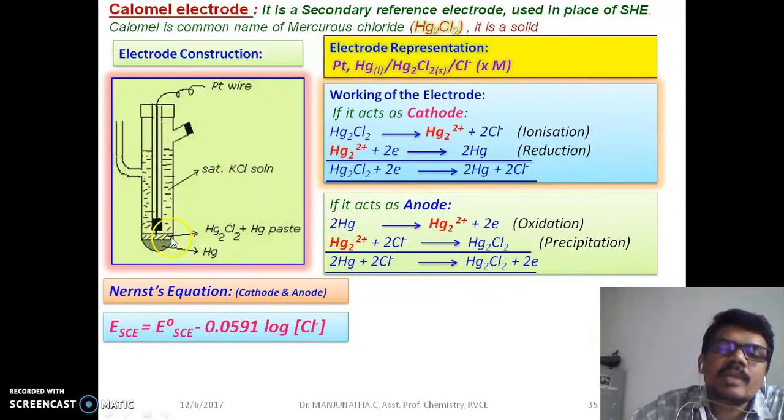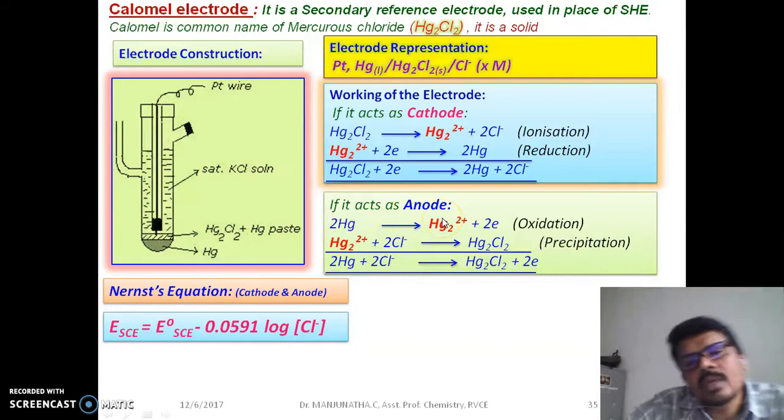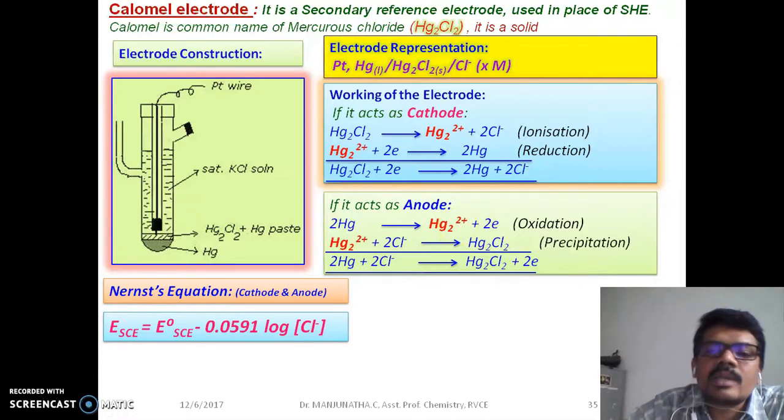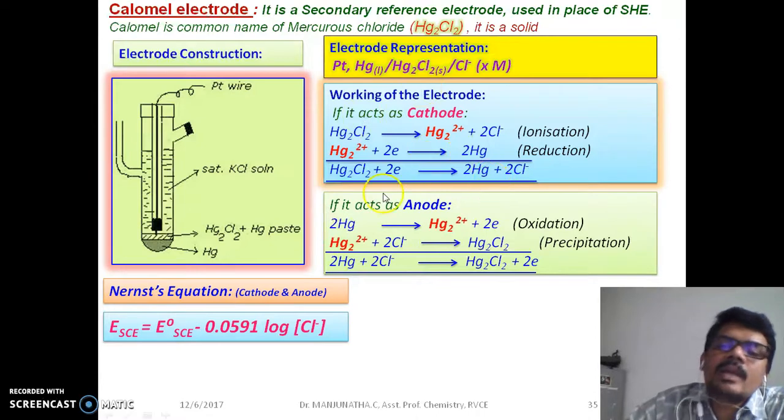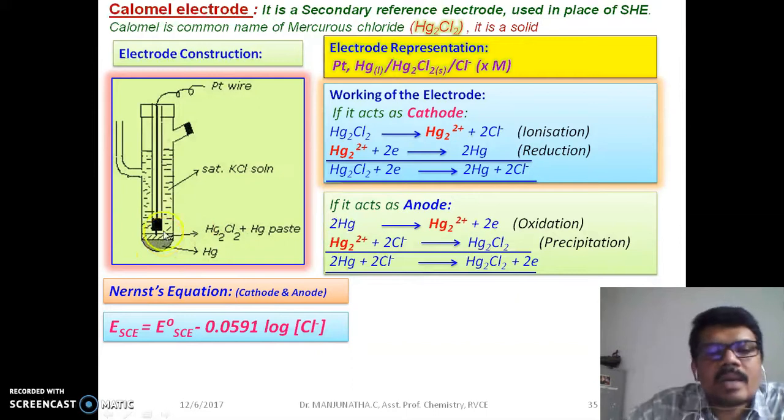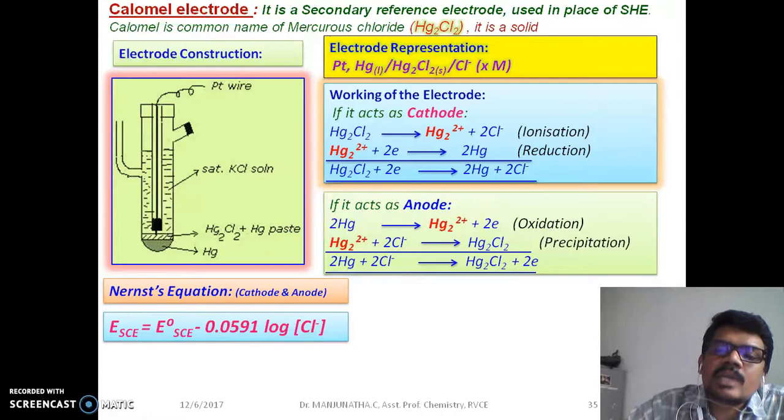Here, that mercury metal which is present in the bottom of the tube will lose two electrons. It will undergo partial oxidation to form mercurous ion. That is, two moles of mercury is getting converted to Hg2 2+, means each mercury ion is having plus one charge, releasing two electrons. Then that formed mercurous ion, that mercury is getting converted to mercurous and it combines with chloride ion which is present in the KCl solution, two moles of Cl-.